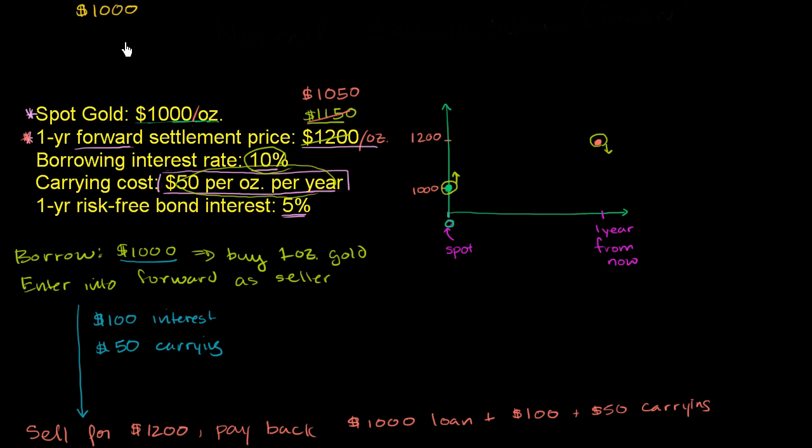So you have two options here. You could just buy gold now, buy one ounce with your $1000 right now. And then when you go forward a year from then, you're going to have that one ounce of gold, plus you're going to have to pay the carrying cost, the safety deposit box and the insurance on the gold. So you're going to have one ounce of gold minus $50.